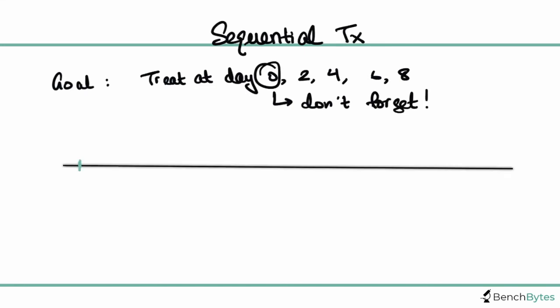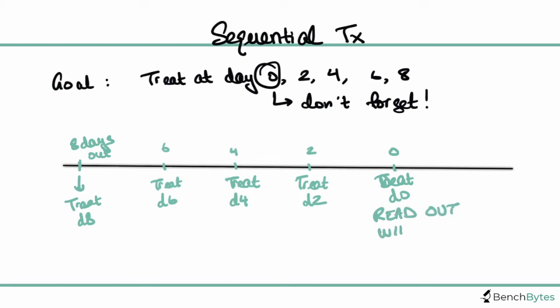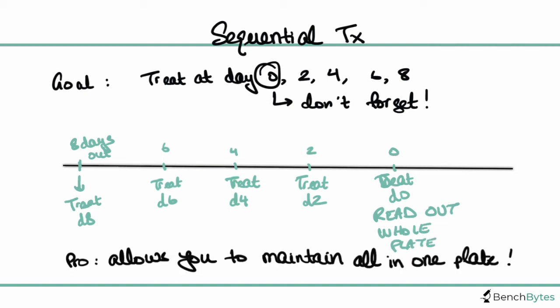We can draw out a timeline with day eight, day six, day four, day two, and day zero. Eight days out, we're going to treat only those cells that need to be treated for eight days total. Then we're going to do the same thing six days out, four days out, and two days out. Basically, you have these cells sitting there until they're ready to be treated and then you just treat them right before the amount of time that you need. At day zero, you would treat or just keep your day zero cells and then you would read it out on the exact same day. That way you get your whole plate in one go without having to do this assay four times.